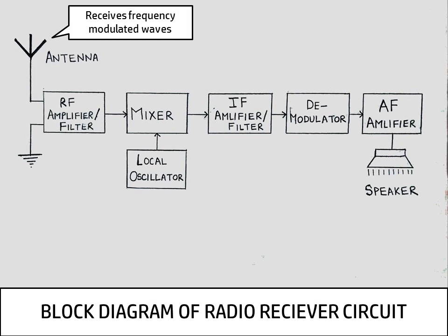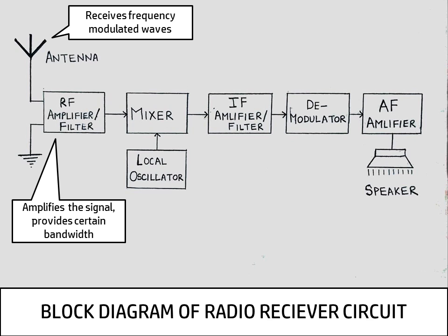Oh, I didn't know that. Okay, so next in the line is RF amplifier. RF amplifier stands for radio frequency. And what it does is, it allows a certain bandwidth, a certain range of frequencies in the circuit. And it also amplifies the signal so that it can be treated in a better way further in the circuit.